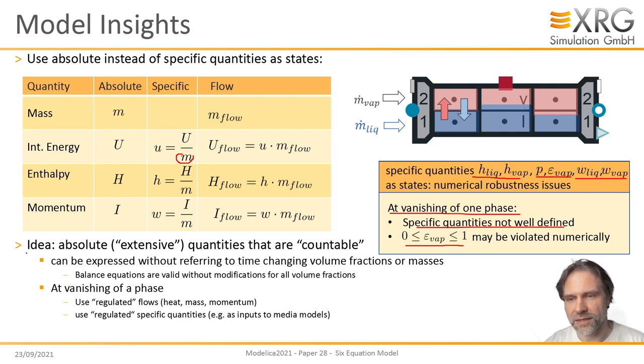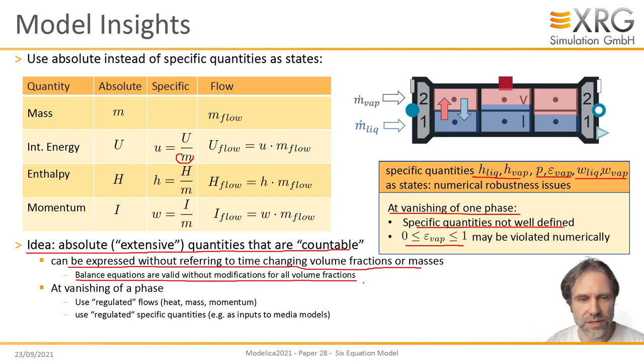And then we decided to take one step back and the idea was, okay, we should use absolute quantities that are countable. Countable means they can be expressed without referring to time-changing volume fractions or masses. That would infer that balance equations are valid without modifications for all volume fractions. That's a big advantage. We can skip all these rules we had before. And at the vanishing of a phase, we can regulate the flows. But that's much simpler because we keep the state equations untouched.